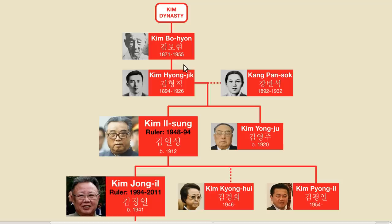We're going to start with Kim Bo-hyun, a commoner who lived in a small village near Pyongyang. He was the father of Kim Hyeong-jik, who in turn was the father of North Korea's founder, Kim Il-sung.